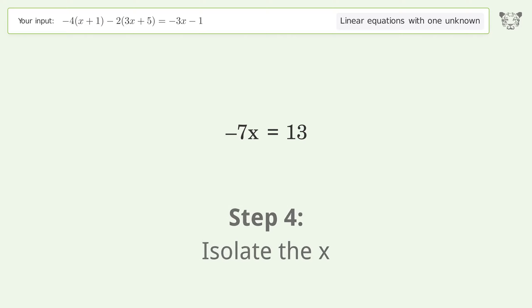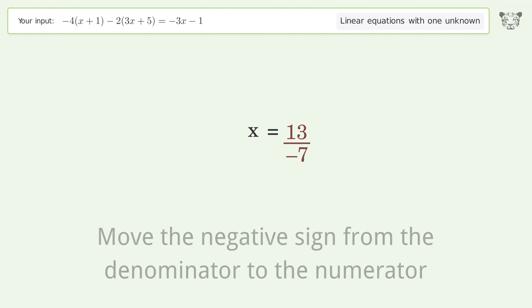Isolate the x. Divide both sides by negative 7. Cancel out the negatives. Simplify the fraction.